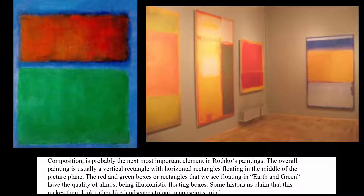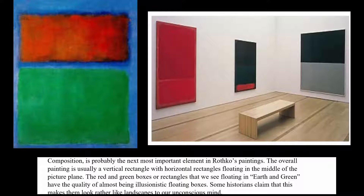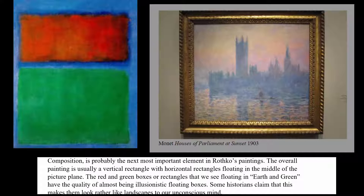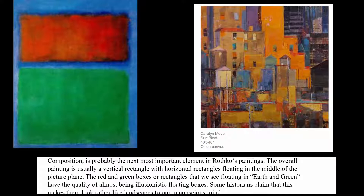Composition is the next important element to look at. It's a vertical rectangle, and in the center, just away from the edges, you've got these floating red and green rectangular boxes that literally feel like they're floating. When this happens, it almost looks like buildings, or grass and sky — it has this quality of having the illusion of being something that's actually there, but it's not.